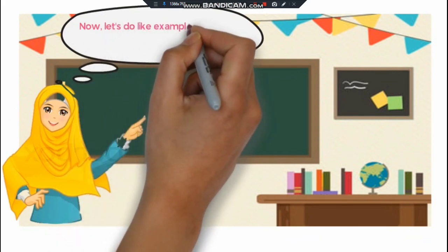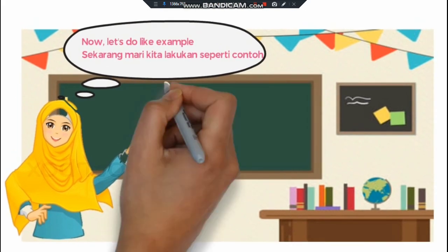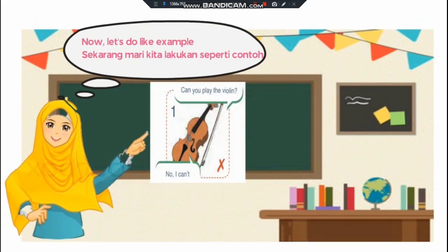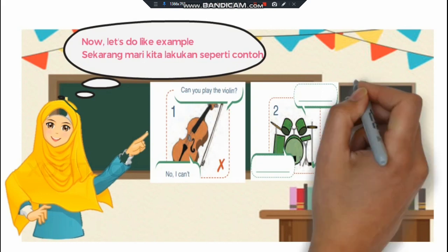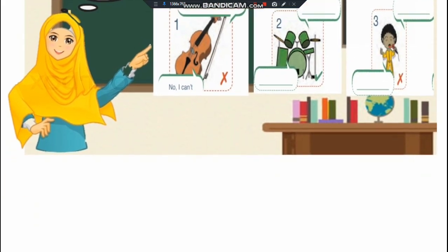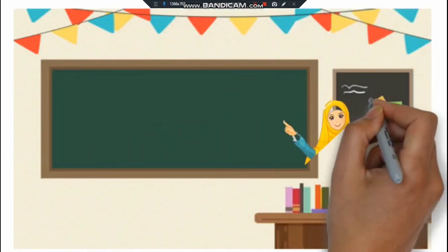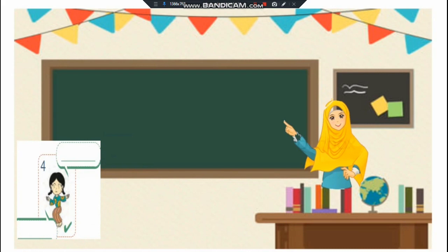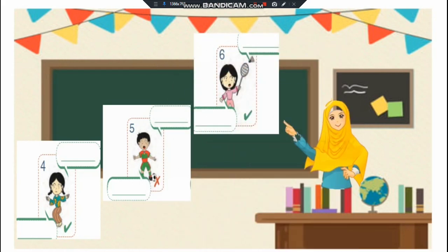Now, let's do like the example. Sekarang, mari kita lakukan seperti contoh. Can you play the violin? No, I can't. Bisakah kamu main violin? Tidak. Ada tanda silang. Number two: play band. Number three: sing. Number four: dance. Ada checklist, berarti yes. Number five: play football. Ada tanda cross, berarti no. Number six: badminton.